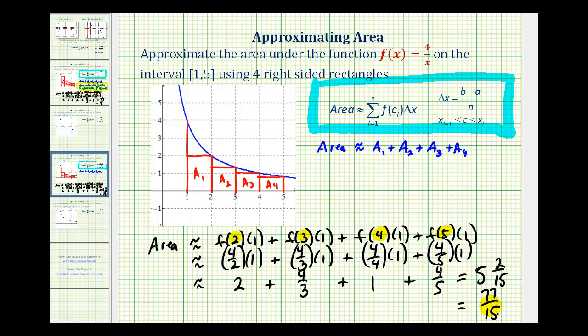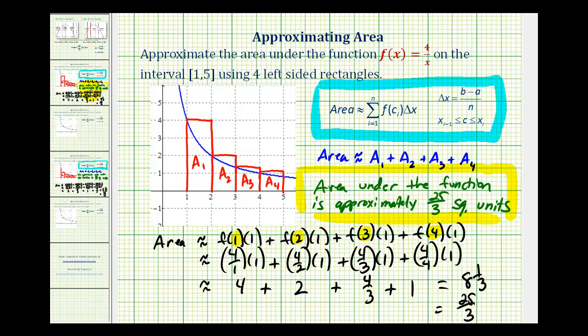So using right-sided rectangles, the approximate area under the function is 77/15 square units. Notice how this is the lower sum because this area is actually less than the area under the function. We know the area would actually be more than this, but we also know, going back to the left-sided rectangles, that the area would be less than 25/3. So it's going to be somewhere in between those two areas.